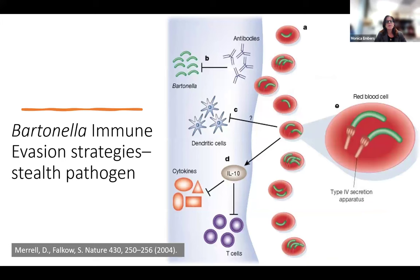Bartonella engages in a number of immune evasion strategies. Bartonella colonizes a niche within the body and seeds bacteria that can infect and survive inside red blood cells. Post-antibodies have no effect on intra-erythrocytic bacteria, but they do prevent new waves of erythrocytic parasitism. Intracellular bacteria have been proposed to affect dendritic cell maturation, inhibit cytokine production, and suppress T-cell proliferation by inducing interleukin-10 expression. A type four secretion system is essential for establishing persistent intra-erythrocytic invasion.